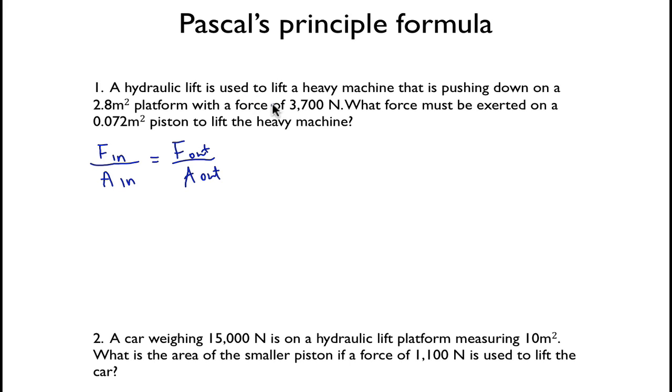So if we're, remember Pascal's principle is that pressure exerted through a fluid is transmitted through that fluid. So if we're looking at a hydraulic lift, like in this problem, it says a hydraulic lift is used to lift a heavy machine that is pushing down on a 2.8 meters squared. So if you see meters squared, you know that's talking about area. Platform with a force of 3,700 newtons here. And then what is the force exerted on a 0.072 meters squared area piston to lift a heavy machine?